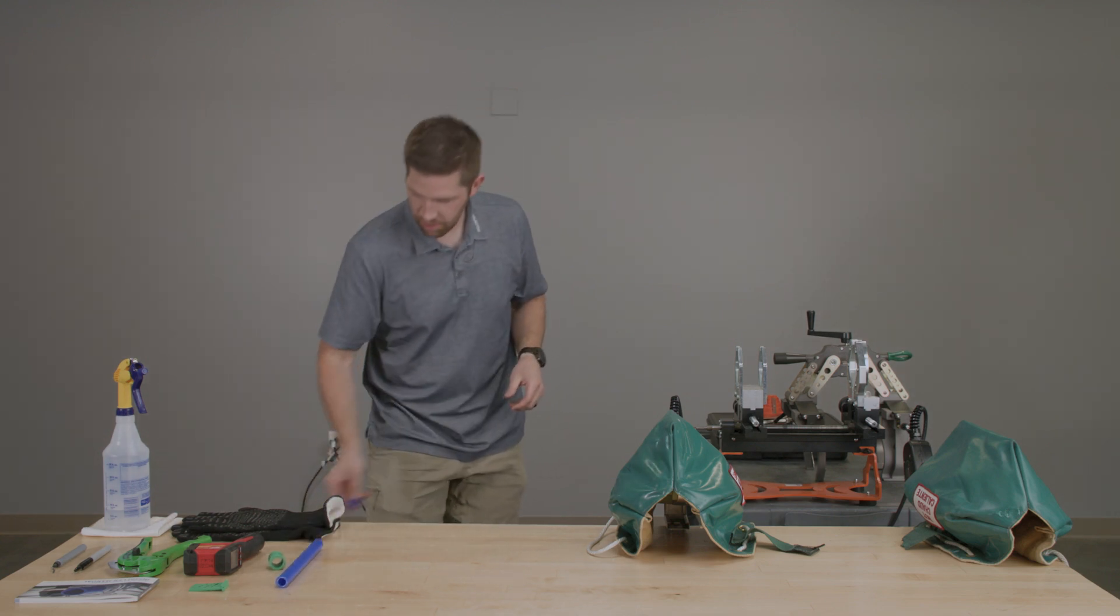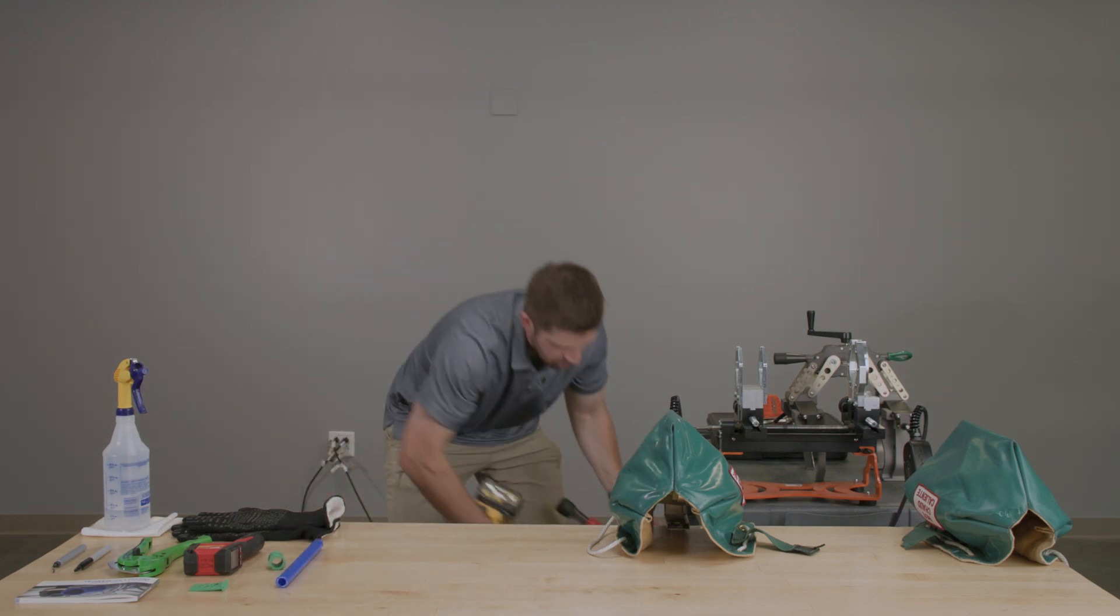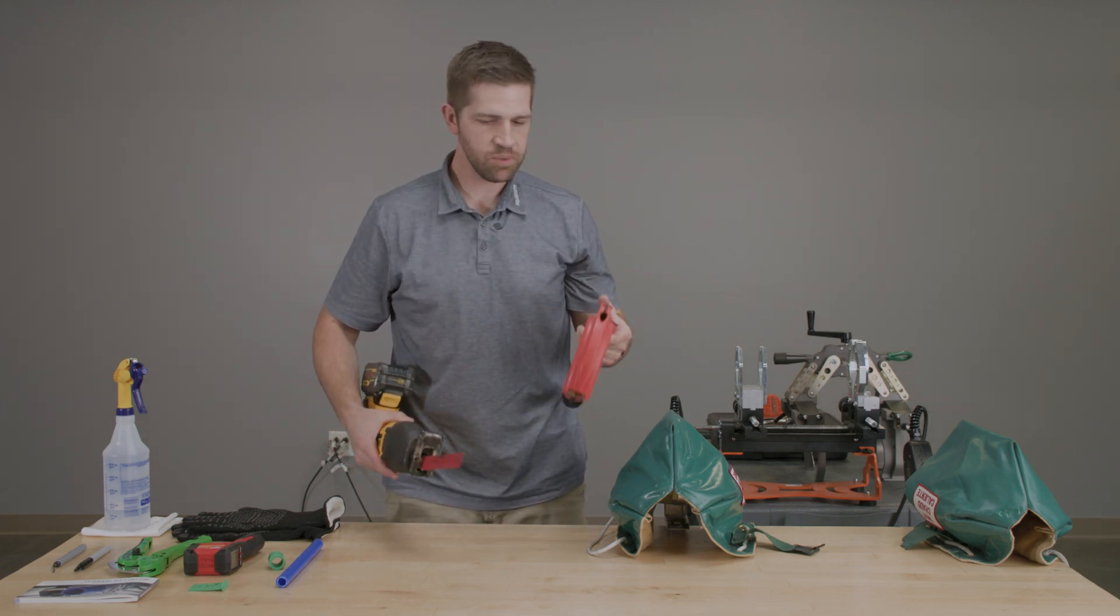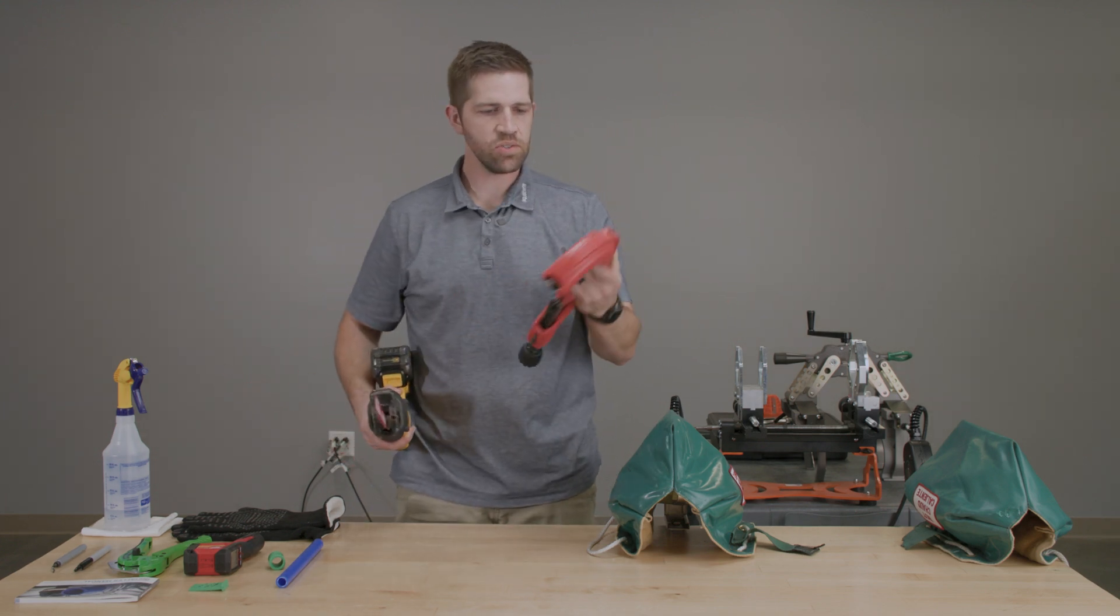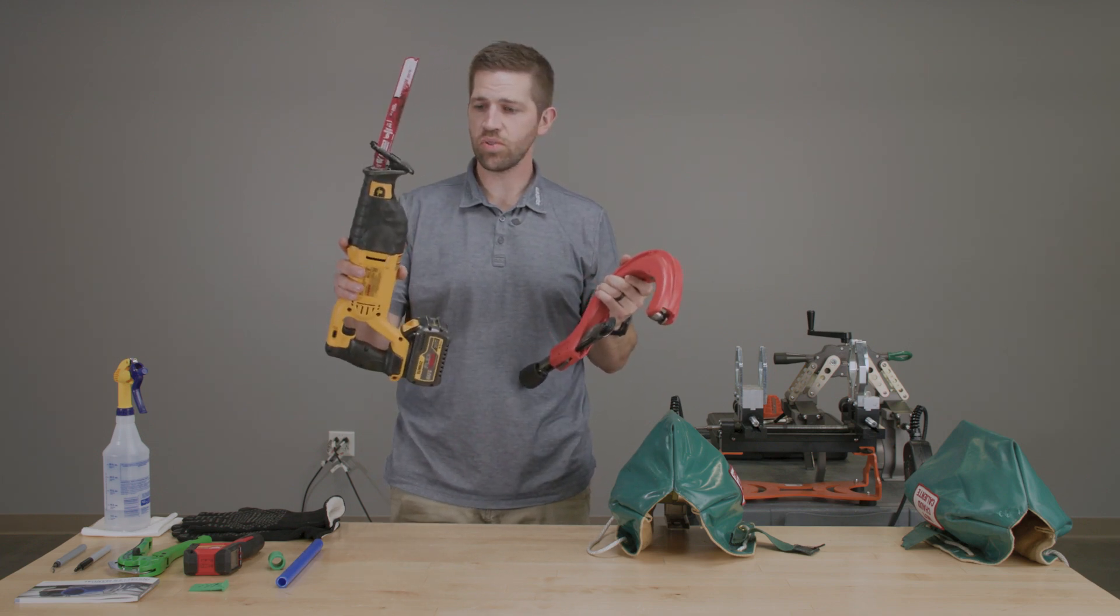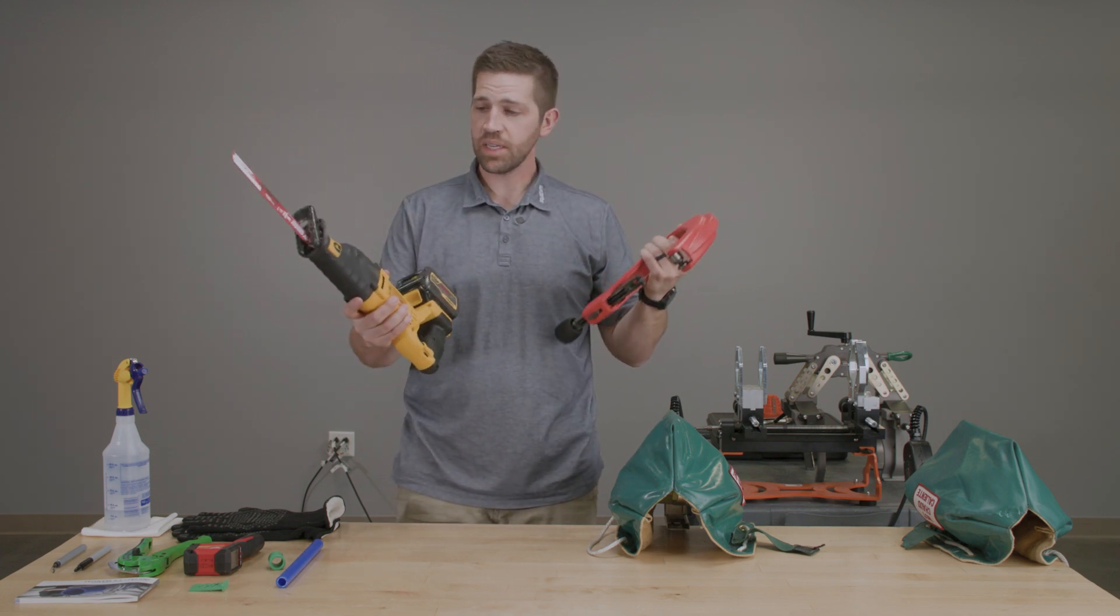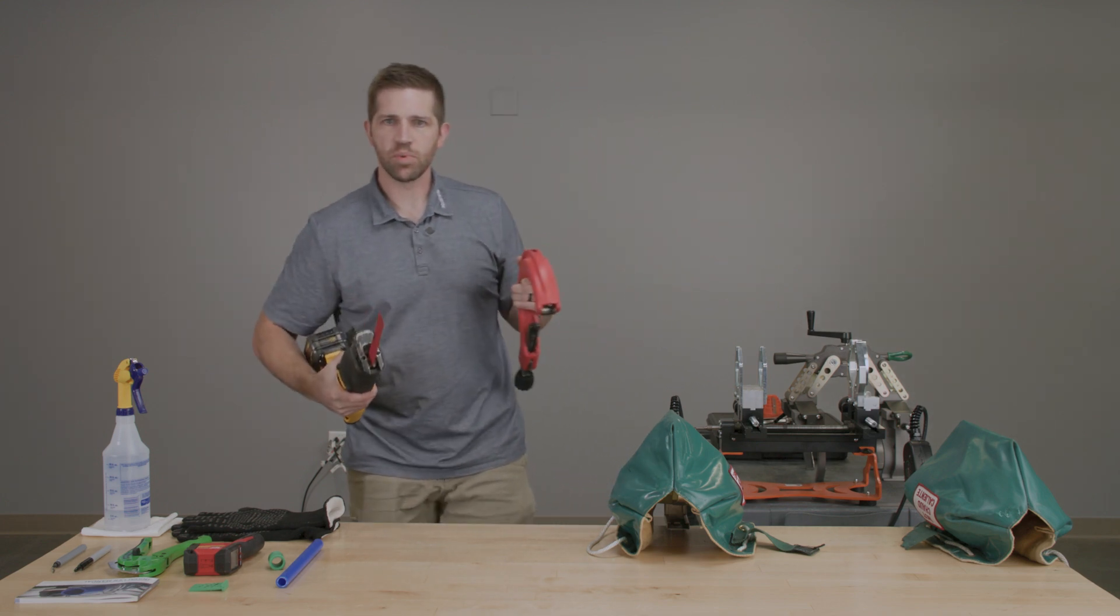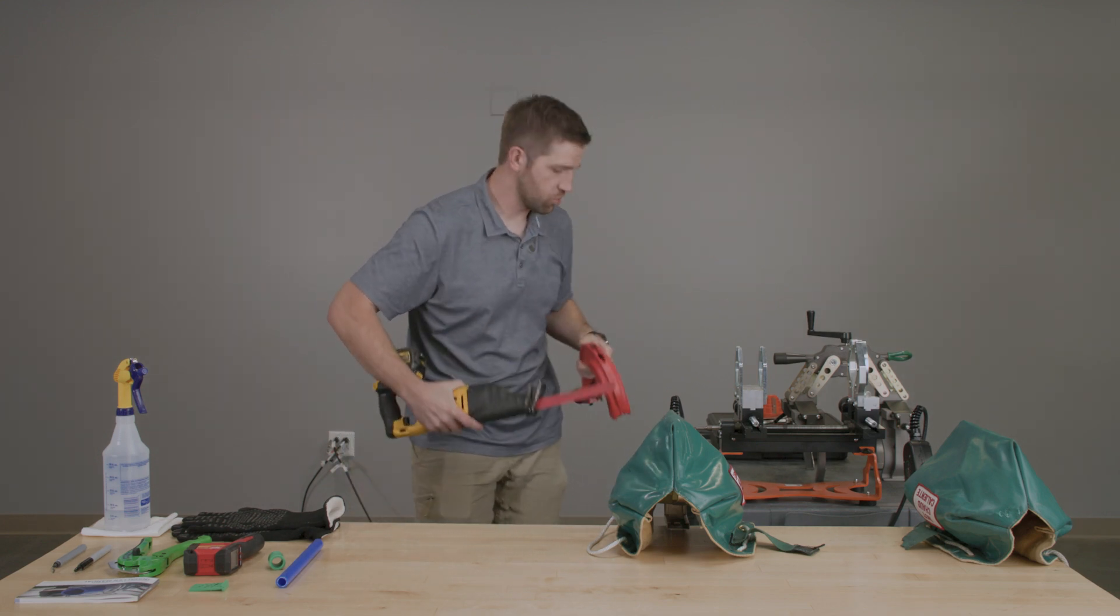There's other cutting methods available. Since socket fusion ranges from half inch all the way to four inch pipes, sometimes you'll be using ratchet cutters, sometimes tube cutters. You may need to use some kind of power cutter. Just know there's lots of options depending on your specific situation.